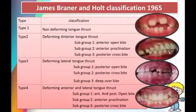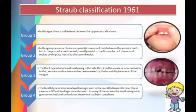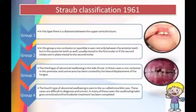Another classification divides tongue thrust into four groups. In group 1 there is a midline diastema between the upper central incisors. In group 2 there is a non-occlusion or open bite between the anterior and posterior teeth. Group 3 involves abnormal swallowing with non-occlusion in the premolar and molar region. Group 4 is abnormal swallowing associated with crossbite, and these cases are difficult to diagnose and correct.